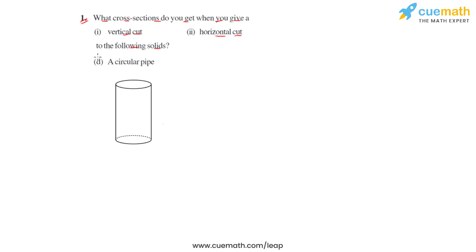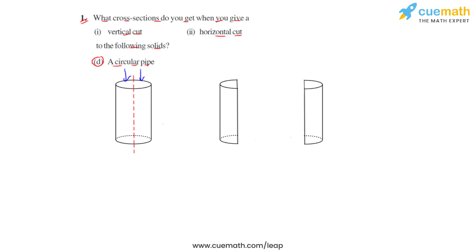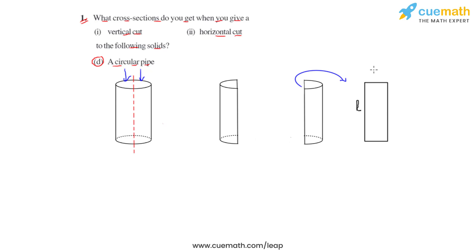Next we have a circular pipe. If we cut the circular pipe vertically along this line, the pipe is divided into two parts. The cross section would be a rectangle, where the height of the pipe represents the length of the rectangle and the circular base represents the breadth or width of the rectangle.